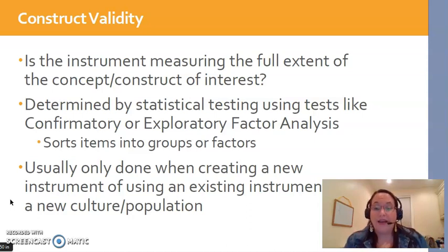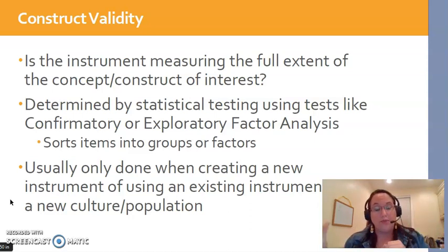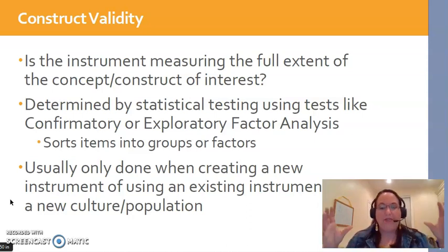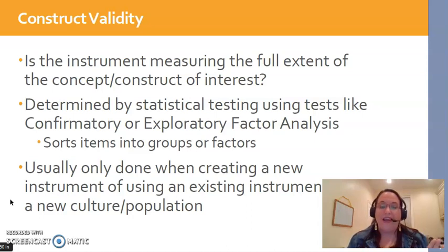There are very advanced statistical tests that can be run — it's called factor analysis. Basically it takes all of the questions on an instrument and sorts them into groups. So these questions are asking about exhaustion, these questions are asking about personal accomplishment, these are asking about something else — sorting them so you can make sure you've asked about each little piece of the full puzzle of burnout, or whatever you're studying. Just like before, usually you're not doing this all the time — when the instrument's first created, and any new use with a different group or different setting, you would want to revalidate it.